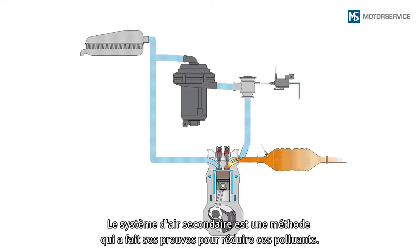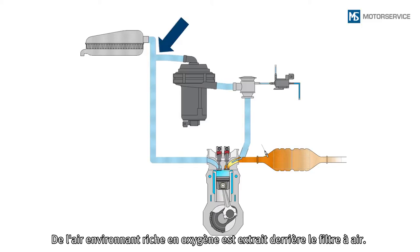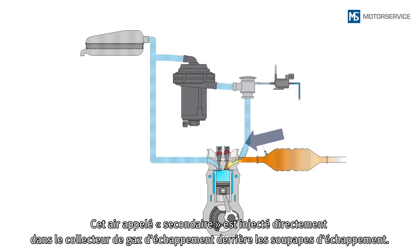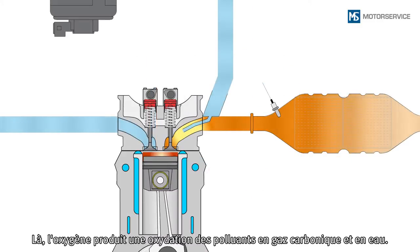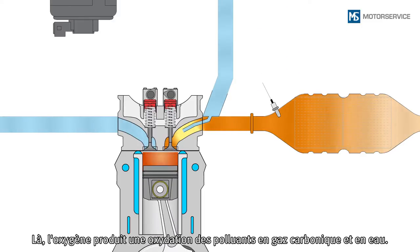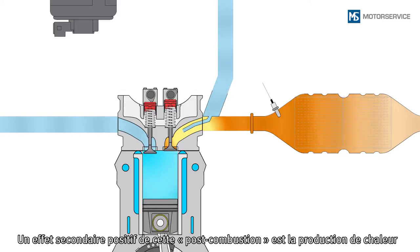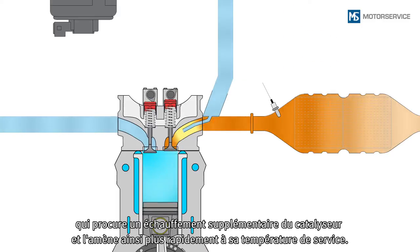The secondary air system is a tried and tested method of reducing these pollutants. Oxygen-rich ambient air is extracted behind the air filter; this so-called secondary air is blown directly into the exhaust manifold behind the exhaust valves. Here, the oxygen causes oxidation of the pollutants, thereby creating carbon dioxide and water. A positive side effect of this after-burning is heat, which heats up the catalytic converter and brings it up to its operating temperature more quickly.